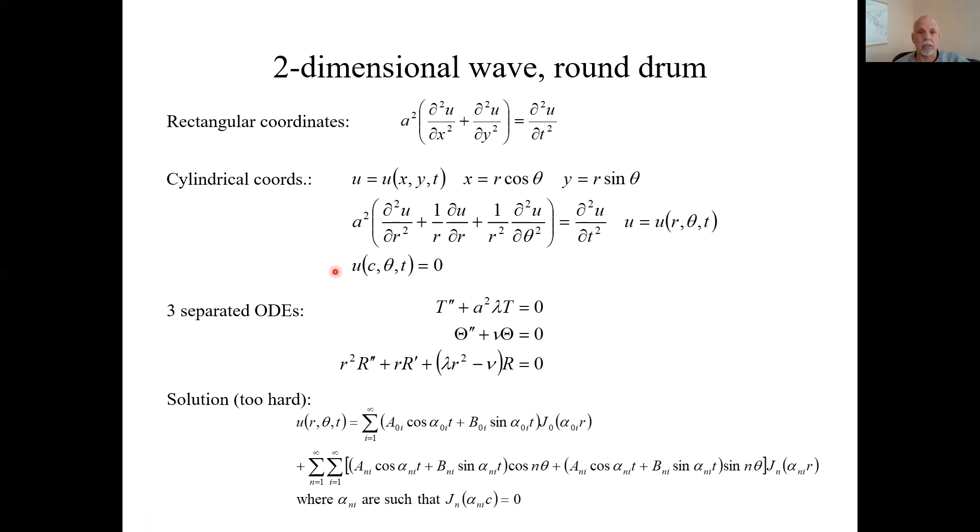We'll say that on the outer edge of this membrane, out where the radius is some fixed radius C, the radius of the drum head, out at that edge, we'll say it's held at a vertical height of zero. So U is the vertical height. Well, you could separate the ODEs as we normally do. I'll go through this in two dimensions. You would get three ordinary differential equations, but we have three variables here.